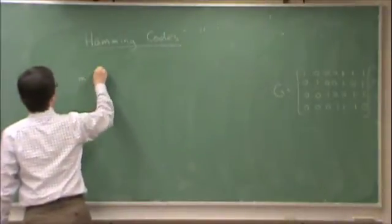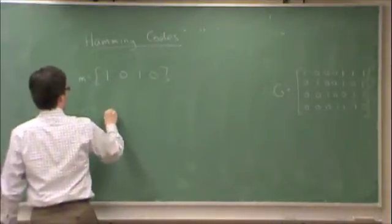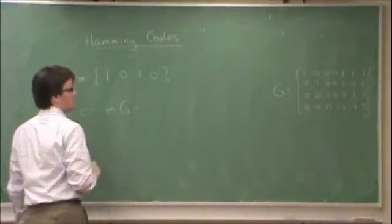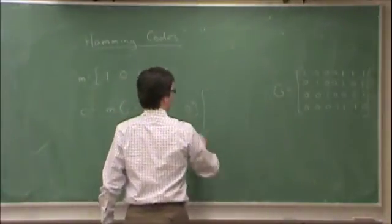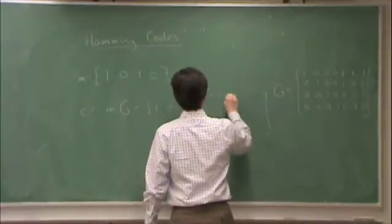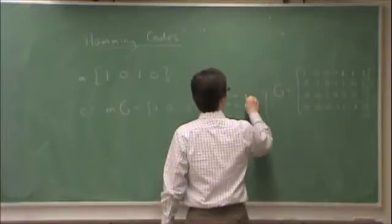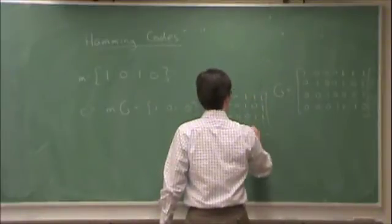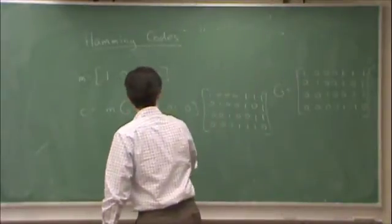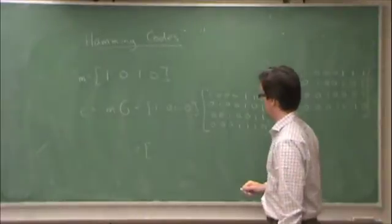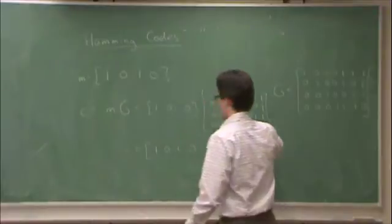And the code word is equal to M G, which is 1 0 1 0 times that G, which is equal to—okay, well obviously the first four elements will be the message itself, because that's the identity sub-matrix.